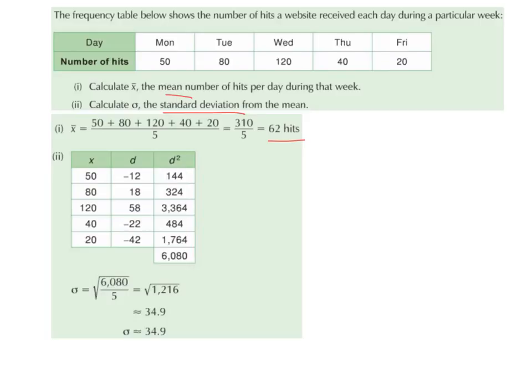Then we add these together. 144 plus 324 plus 3364 plus 484 plus 1764 gives us 6080.